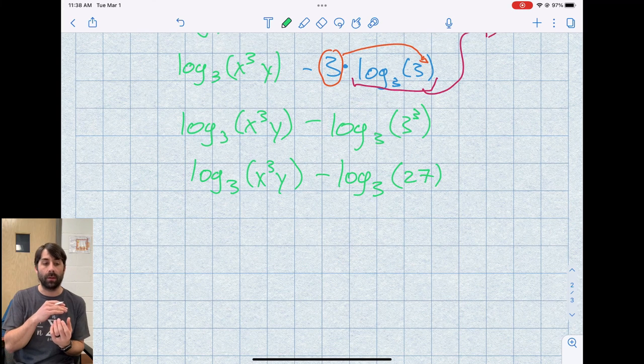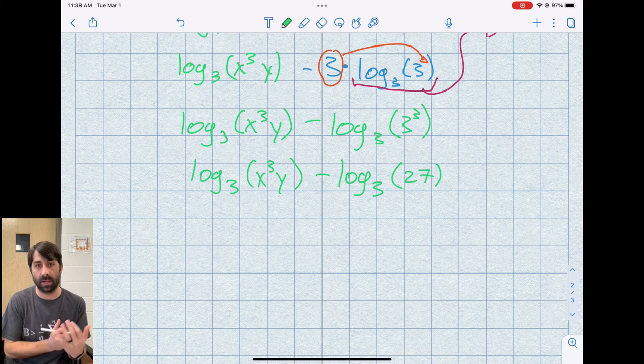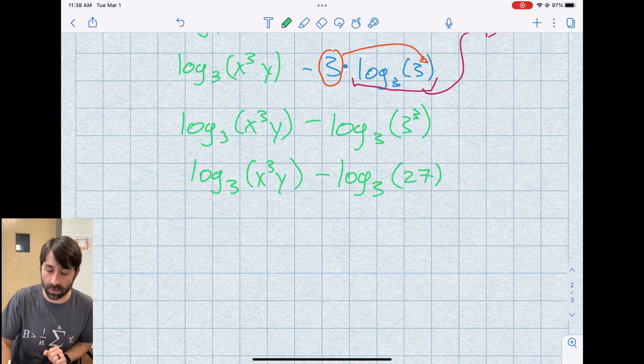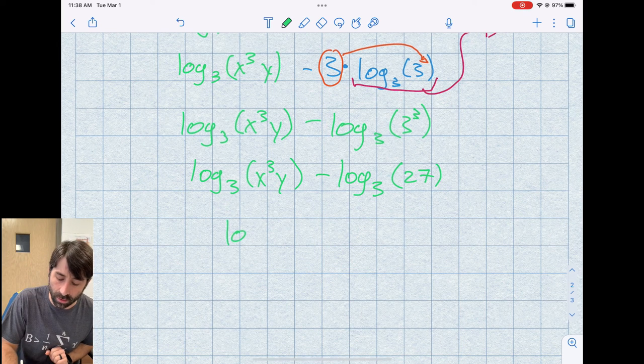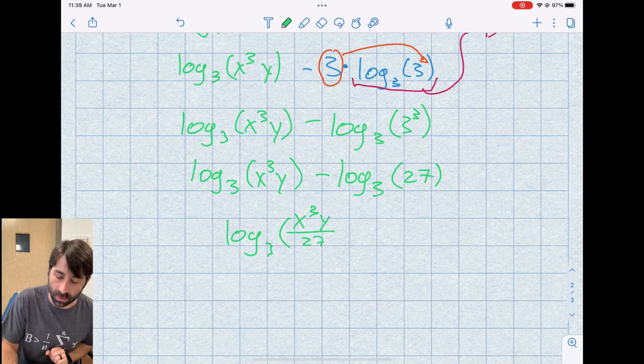And now finally, I can just apply the quotient rule because I have the difference of two logs. If I have the difference of two logs, the thing that I'm subtracting becomes the divisor as I condense these logs. And so finally, this is log base 3 of x cubed y divided by 27.